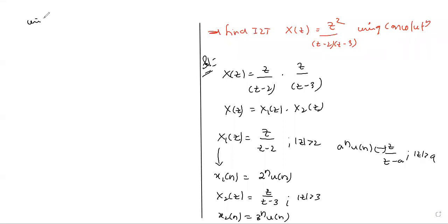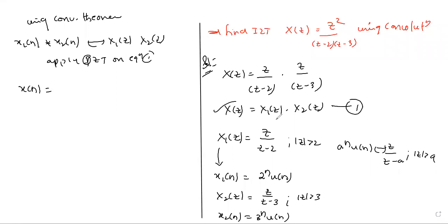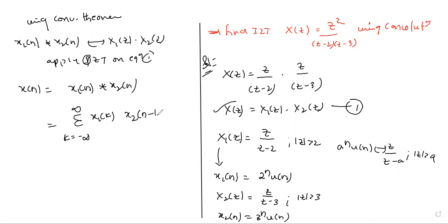Now we can use the convolution theorem to find the inverse Z-transform. Using the convolution theorem: X1 of n convolved with X2 of n has Z-transform X1 of Z times X2 of Z. Applying the inverse Z-transform on equation 1: X of Z inverse transforms to X of n, and X1 of Z times X2 of Z inverse transforms to X1 of n convolved with X2 of n. The formula for convolution is the sum from k equal to minus infinity to infinity of X1 of k times X2 of n minus k, where k is a dummy variable analogous to tau in continuous time.